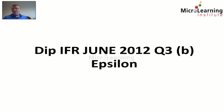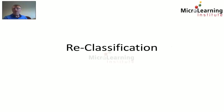Hello and welcome back to the MicroLearning Institute. In this short tutorial we look at a question called Epsilon from the June 2012 Diploma in IFR examination. This question deals with the reclassification of a cash generating unit to held for sale.